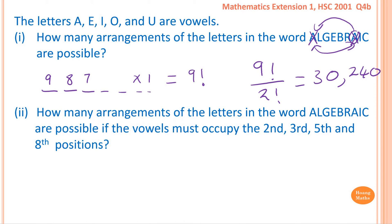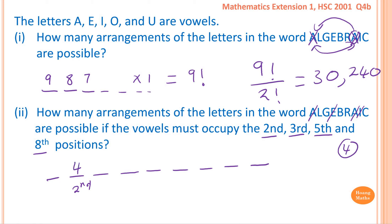How many arrangements of the letters in the word ALGEBRAIC are possible if the vowels must occupy the first, third, fifth, and eighth positions? We must do the condition first. We have nine letters — positions one through nine. We have four vowels to place in those four positions: four choices for the first vowel position, then three left for the third position, then two for the fifth, and one remaining vowel for the eighth position.